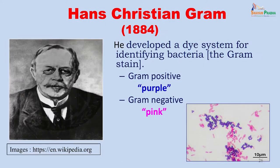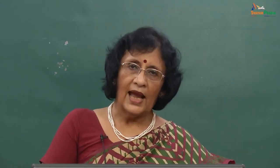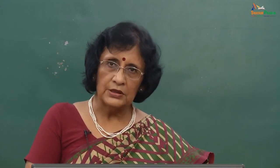Seeing microbes at a larger level — when they collect together and form a colony — was one advance. Getting a microscopic view of organisms required staining techniques, first developed by Hans Christian Gram. He developed a dye system for identifying gram-positive organisms (appearing purple) from gram-negative organisms (appearing red). This color differentiation was essentially based on the cell wall of these organisms, and antibiotics which act on the cell wall could be chosen based on whether the organism was gram-positive or gram-negative. His simple staining technique thus directly affected treatment of the patient.